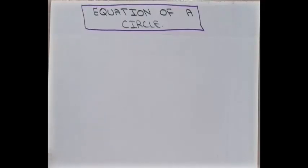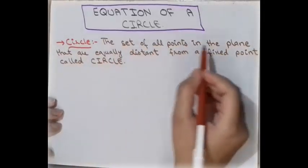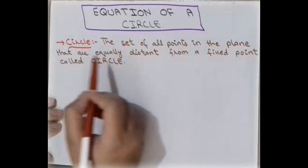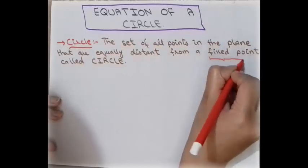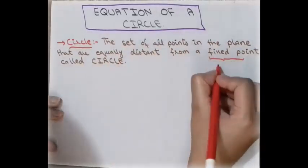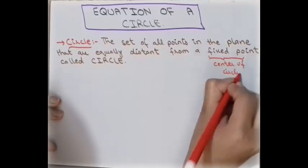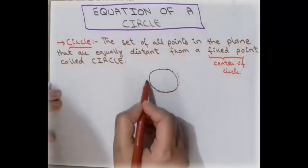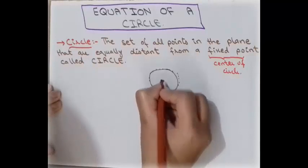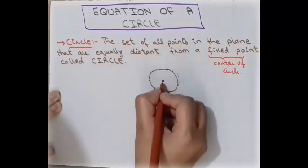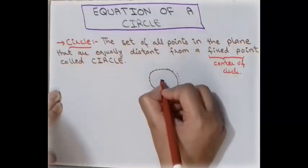The definition of a circle: the set of all points in a plane that are equally distant from a fixed point is called a circle. That fixed point is called the center of the circle. So if we have a set of points in a plane that are equally distant from a fixed point, that set is called a circle, and the fixed point is called the center.